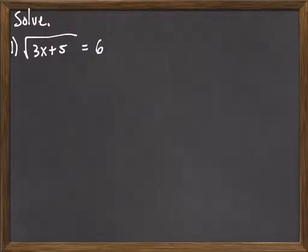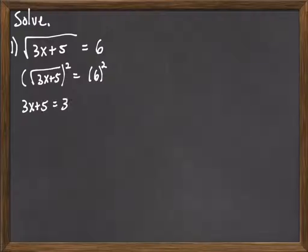So we say we have square roots, so let's square both sides. We square the square root, it goes away, and 6 squared, in this case, would be 36.